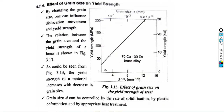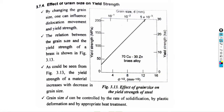Now we will plot a graph to illustrate the Hall-Petch Effect. Along the x-axis, we plot grain size, which is the inverse square root of diameter. The grain size values plotted are: 10 to the power of minus 1, 10 to the power of minus 2, and 5 times 10 to the power of minus 3 — from largest to smallest grain size.